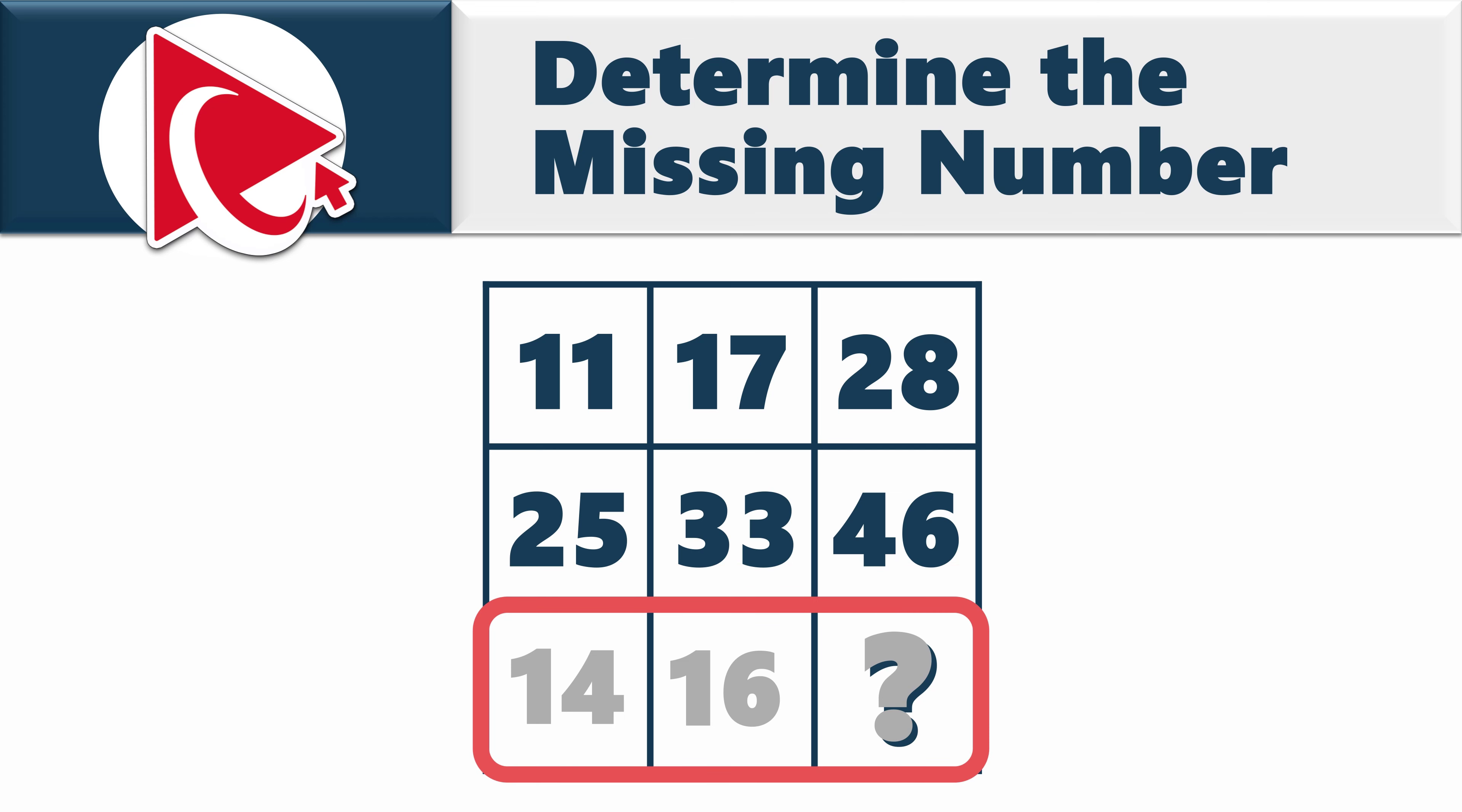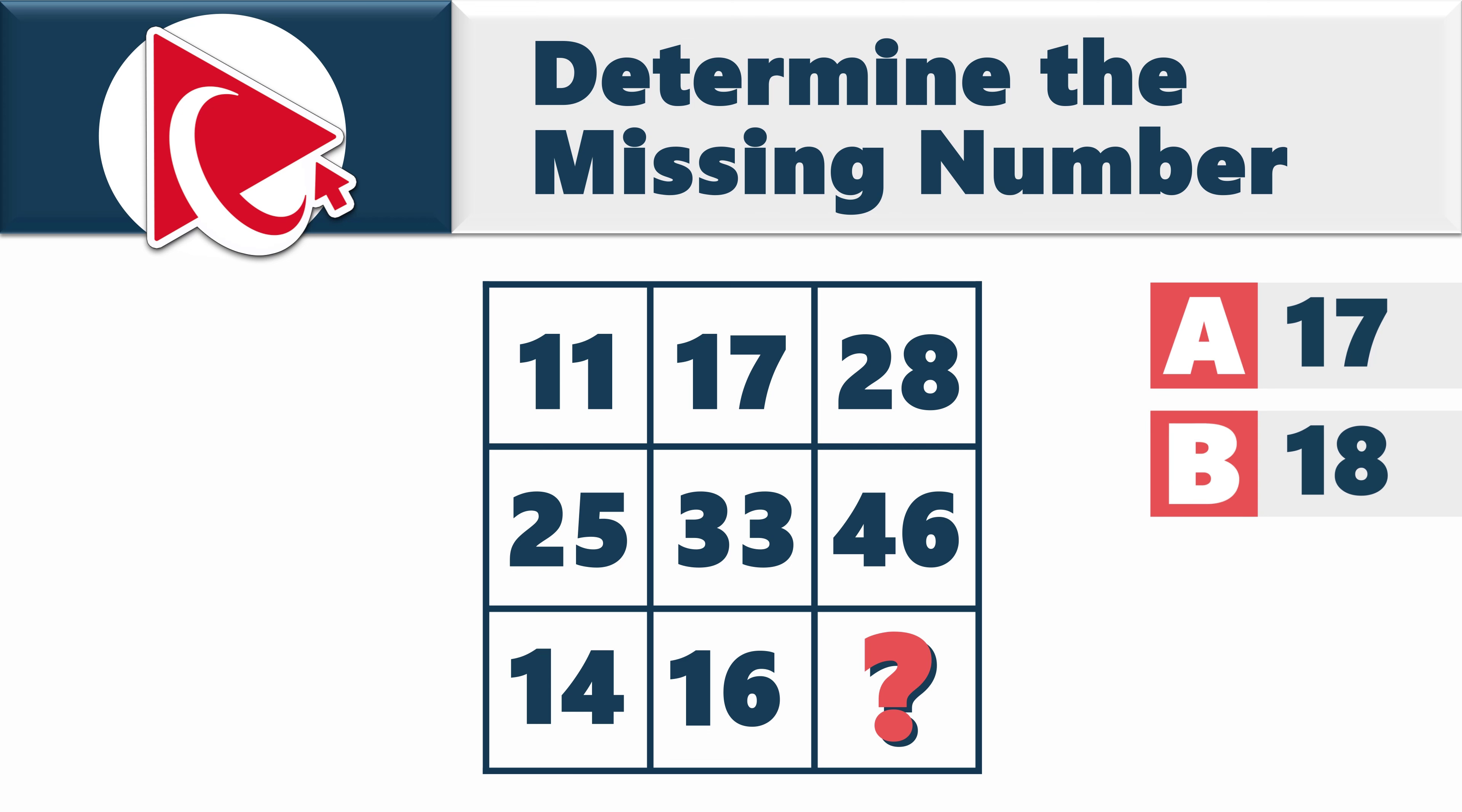In the second row, the numbers are 25, 33, and 46. And in the third row, the numbers are 14, 16, and the missing number, which you need to determine and calculate out of 4 possible choices: Choice A, 17; Choice B, 18; Choice C, 19; and last but not least, choice D, 21.